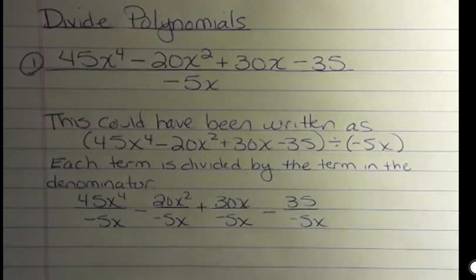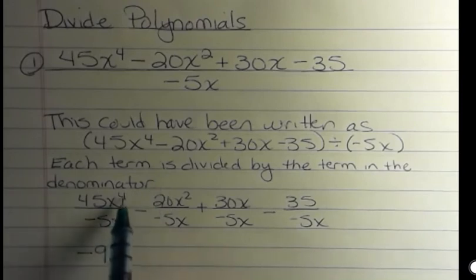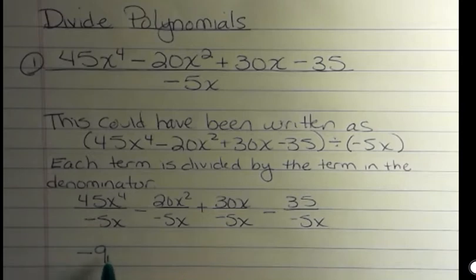And then I'm going to simplify each part. 45 divided by negative 5 is negative 9. I have four x's on the top and only one on the bottom. That's going to leave x to the 3rd. A negative times a negative or divided by a negative is a positive. 20 divided by 5 is 4. I have one extra x on top.